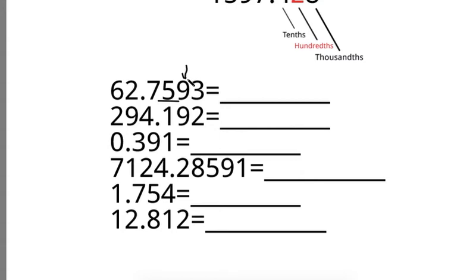And you want to see if 9 is less than 5 or greater than or equal to 5. 9 is greater than or equal to 5, so what you want to do is round that number which is in the hundredths place up one number. So this 5 would become a 6 because the number to the right of it was greater than or equal to 5. So this number becomes 62.76.